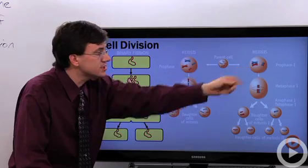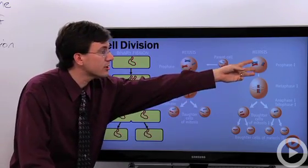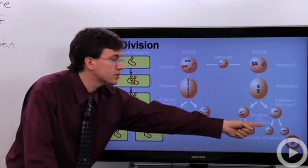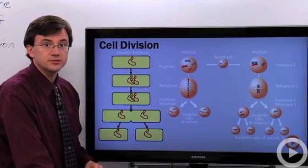Here we have meiosis, on the other hand, where you start off with four DNA molecules, but the four daughter cells only have two chromosomes each.